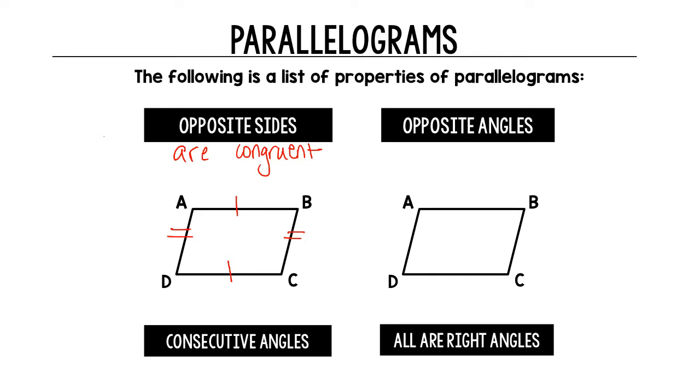We know the opposite angles are congruent. So angle A and angle C are congruent. Angle D and angle B are also congruent.